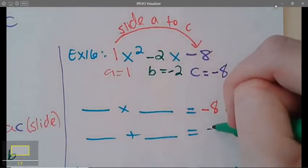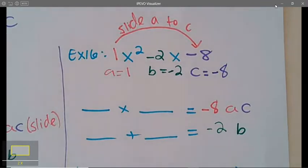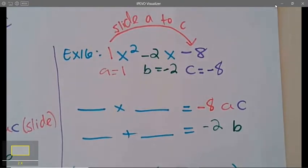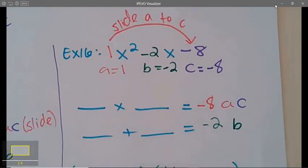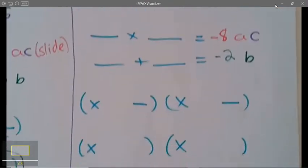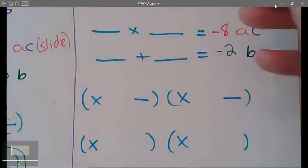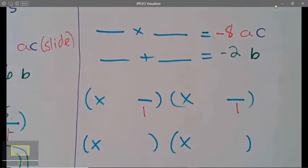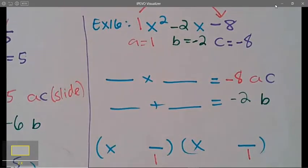And don't forget this is called slide and divide—don't forget to divide. So I slid over the 1, my a value, which means at the very end I'm going to divide by my a value which is a 1. Let's come up with the numbers that will multiply to be negative 8 and add to be negative 2.